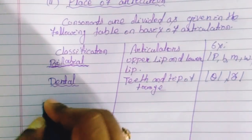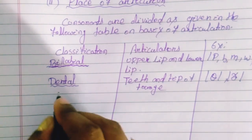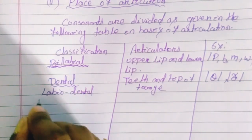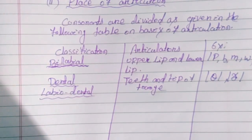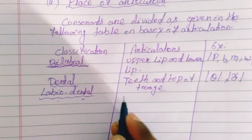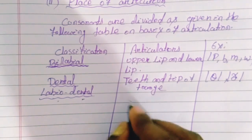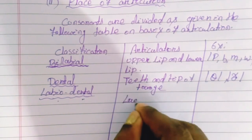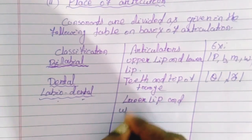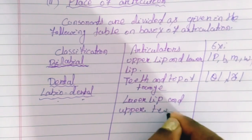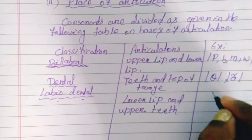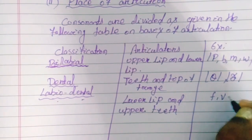Next is labiodental. During the production of labiodental consonant sounds, the articulators are the lower lip and upper teeth. The examples are the /f/ sound and /v/ sound.